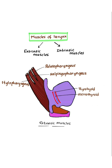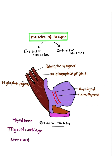Remember the muscles that are inserted on the posterior border of the lamina of the thyroid cartilage — there are three: palatopharyngeus, salpingopharyngeus, and stylopharyngeus. The other two muscles are thyrohyoid and sternothyroid. From sternum to thyroid cartilage: sternothyroid. From thyroid cartilage to hyoid bone: thyrohyoid.